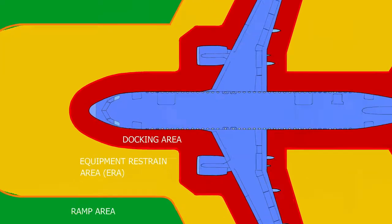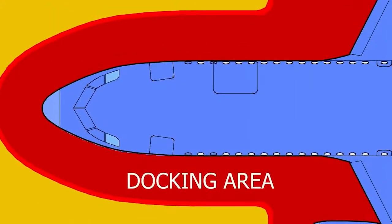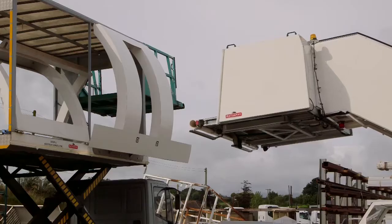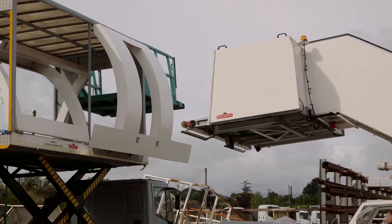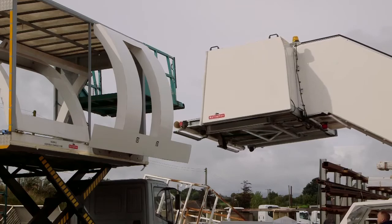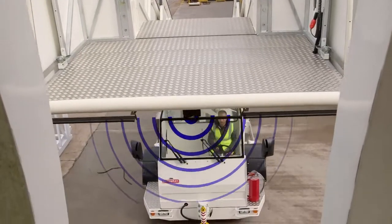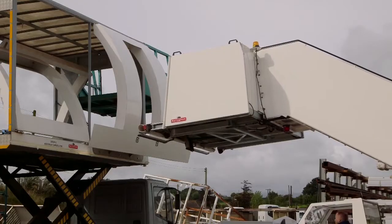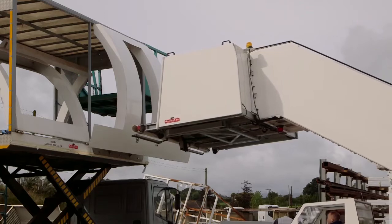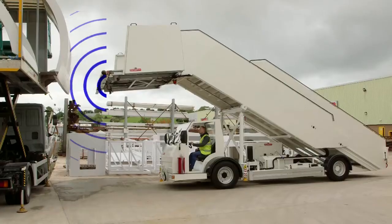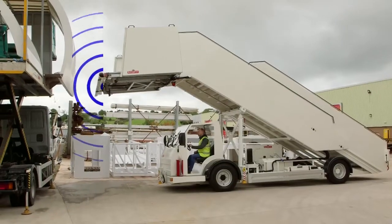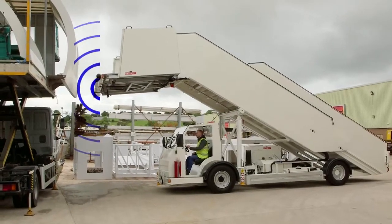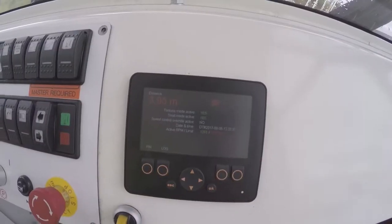When ground support equipment reaches the docking area, the system will automatically engage snail mode. In snail mode the speed is limited to just 0.8kmph. The dashboard display confirms that snail mode is active.